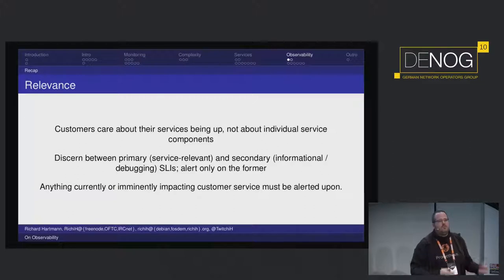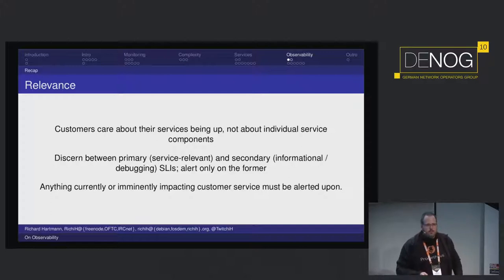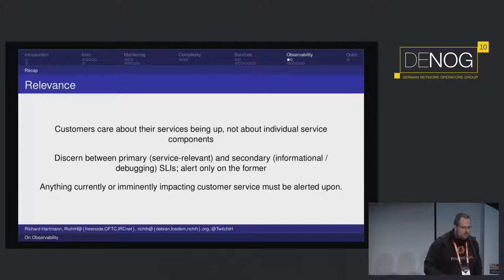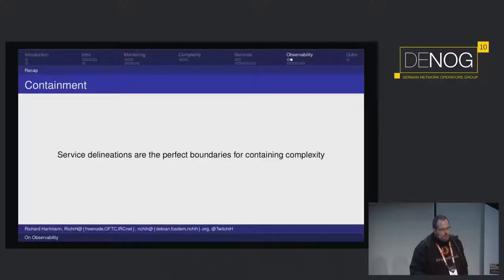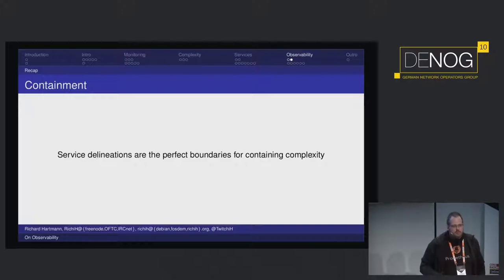Classical monitoring is alerting on whatever — maybe on single machines — which is useful to a certain extent. But you must always also alert on those service boundaries, because this is what people are paying for. Those service delineations are the perfect containers for complexity, because they're already good compartments for it.